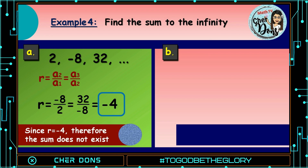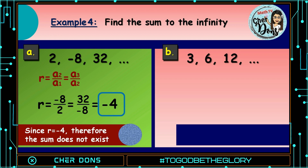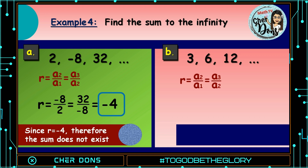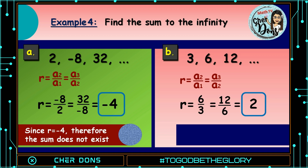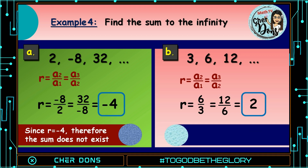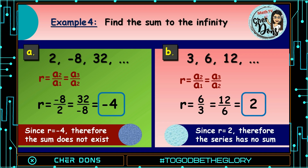For letter B, we have 3, 6, 12, and so on. Again, let us first find the common ratio. r equals a sub 2 divided by a sub 1, or a sub 3 divided by a sub 2. Plugging in: r equals 6 divided by 3, which equals 2. Or, 12 divided by 6, which is also 2. Note that r should be greater than negative 1 but less than 1. Since our computed value of r is 2, which is greater than 1, therefore the series has no sum.